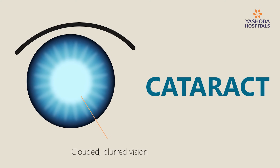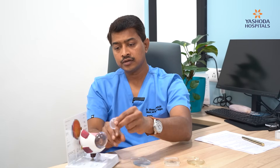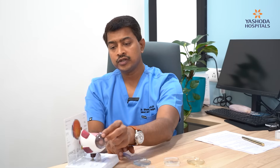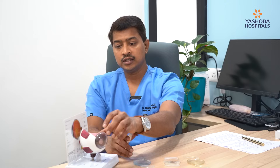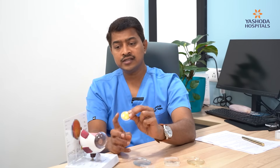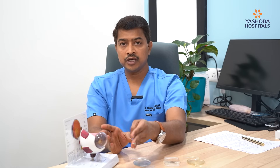What is cataract? This is the eye model. Normally our lens is a clear lens inside the eye through which we can see very clearly. Once any individual ages above 60, the lens which is transparent gets converted to an opacified lens, which blocks the light rays entering the eye.